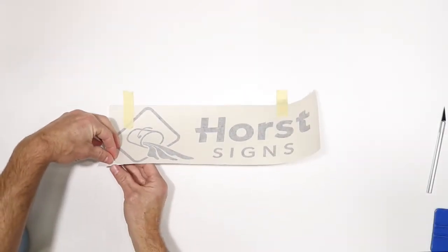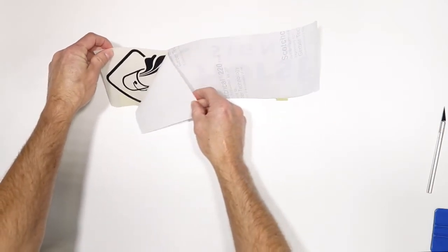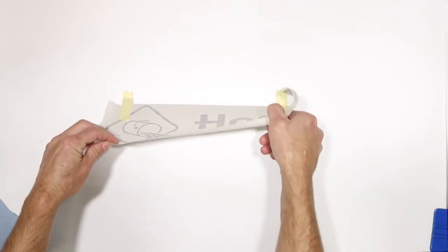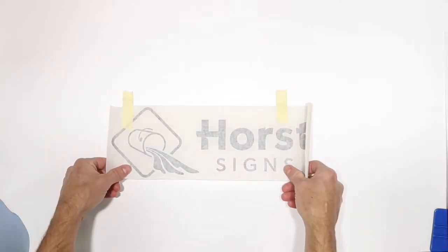The final step is application. First, remove the backer while holding the decal away from the surface. Pull the decal taut and lightly stick the lower corners to the surface.